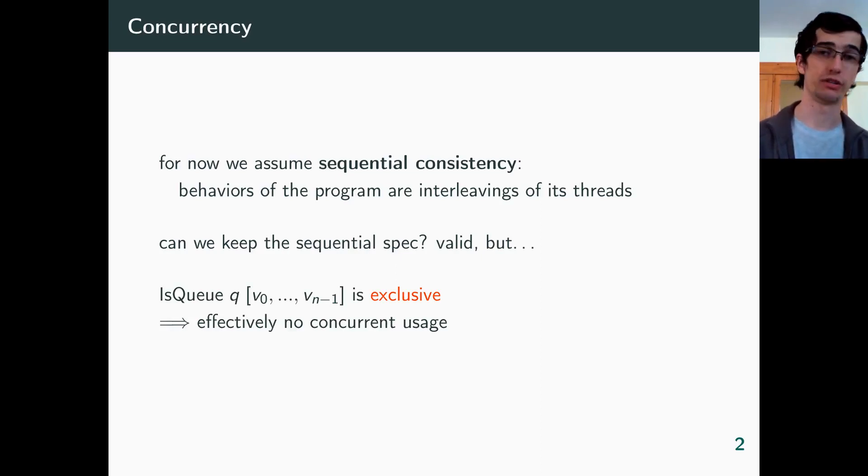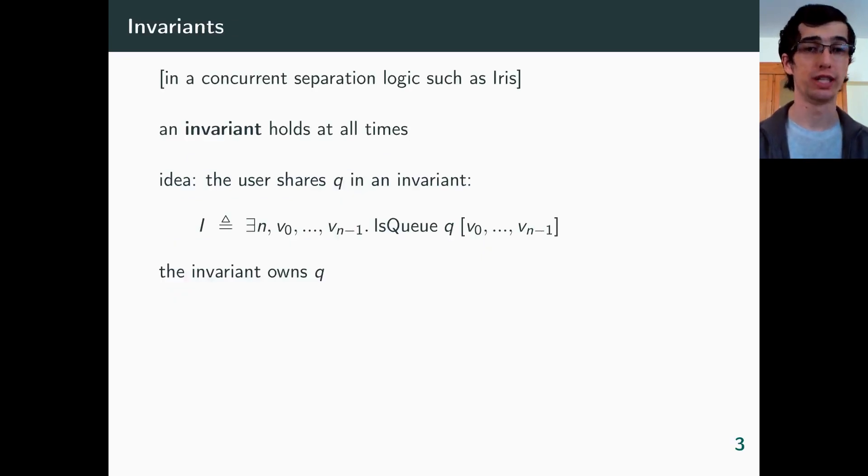So let's consider a queue that is thread safe. To see how to reflect thread safety in the spec, let's adopt for a moment the point of view of the user. As a user of a concurrent data structure, we want to share its ownership among threads. And in a concurrent separation logic, such as Iris, we can do it by putting it in an invariant. An invariant is an assertion which holds at all times, and in which we can put whatever resource we want. Then it is the invariant itself which owns the resource, and any thread can access it.